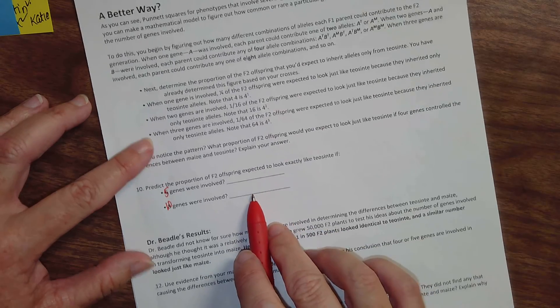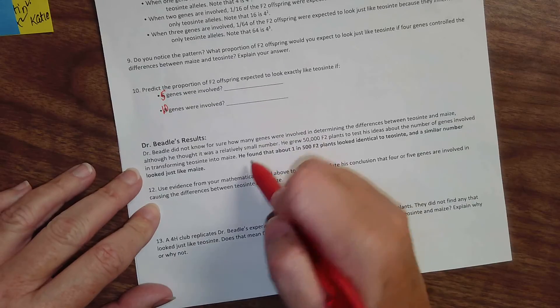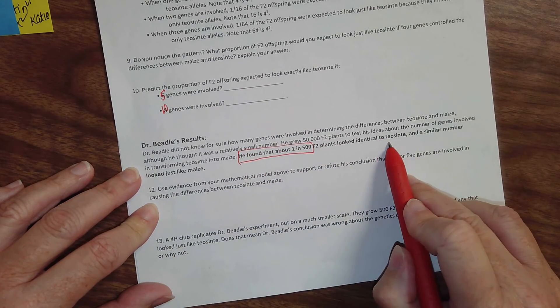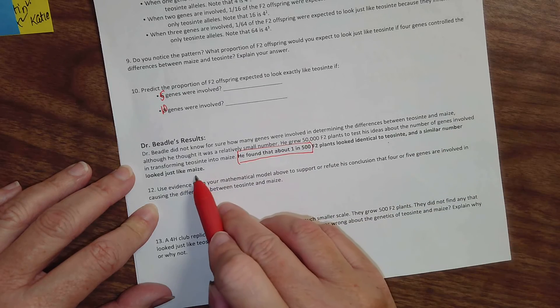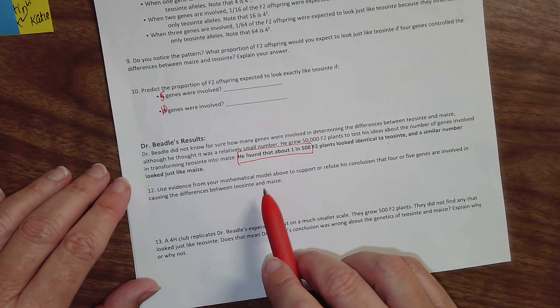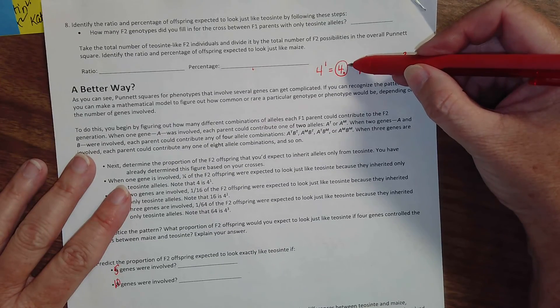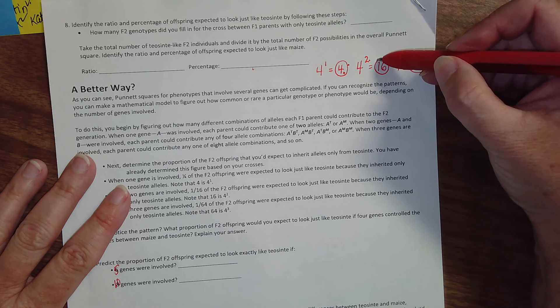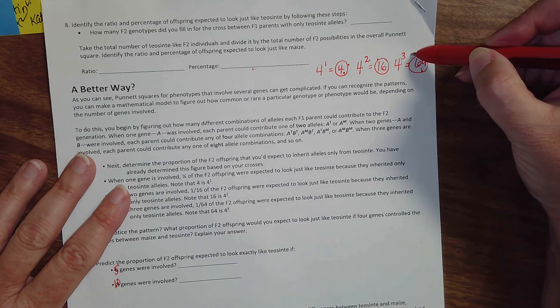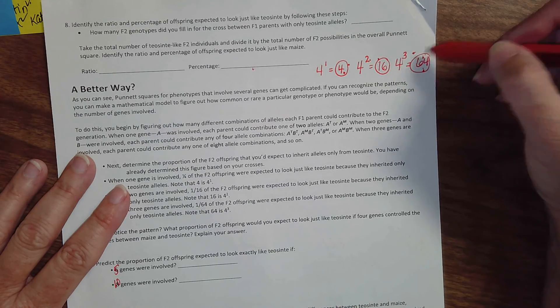So Beadle noticed that one in 500 plants looked identical to Teosinte, and one in 500 looked like maize. So we're trying to figure out how many genes control that. We know it's not one because that's not one in 500. It's one in four. We know it's not two. It's more than that. We know it's not three even. We know it's more than three because this says one in 64. I hope that helps.